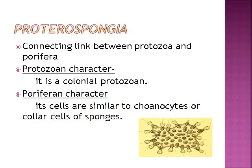Proterospongia — it is the connecting link between Protozoa and Porifera. The protozoan character: it is a colonial protozoan, it forms colonies. Porifera character: its cells are similar to choanocytes or collar cells of sponges.